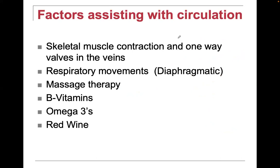What also increases circulation is exercise — contracting muscles acts as a pump. Diaphragmatic breathing and movement of the diaphragm help pump fluid and blood. Massage therapy helps increase circulation. B vitamins — particularly niacin, which is B3 — also help. Some people experience flushing from niacin, so a non-flushing form called niacinamide is available. Omega-3 fish oils are also effective.